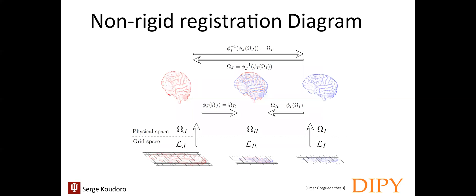Let's quickly review the basic concepts of image registration through this illustration. We have two images: the static image LG on its own grid space, and the moving image LI on its own grid space. First, we need to project them into a common space named the physical space, which permits obtaining independence from the image acquisition parameters.